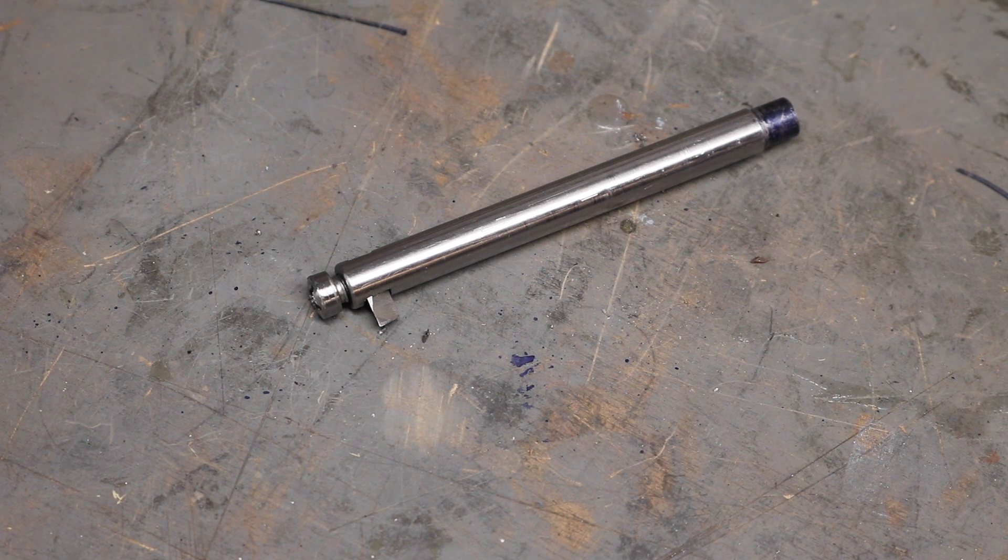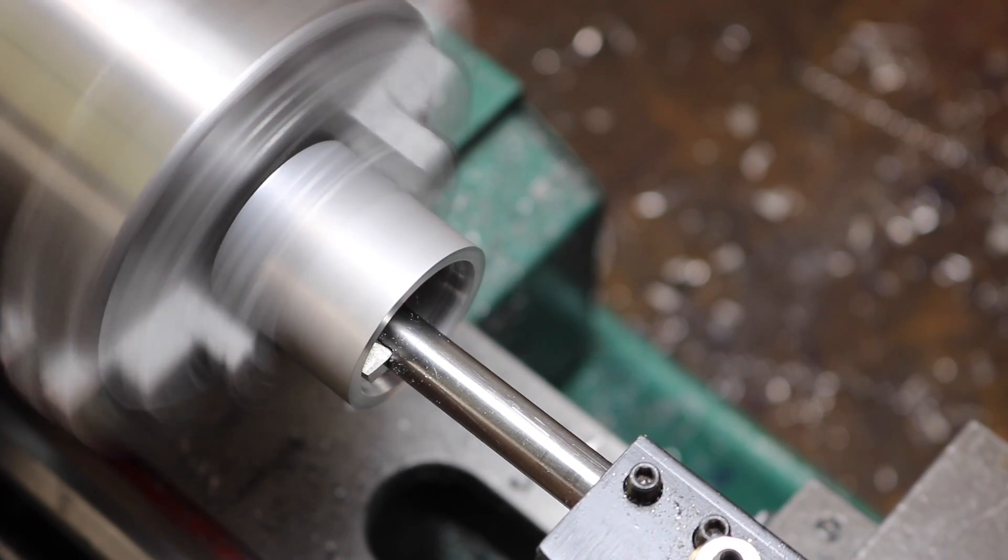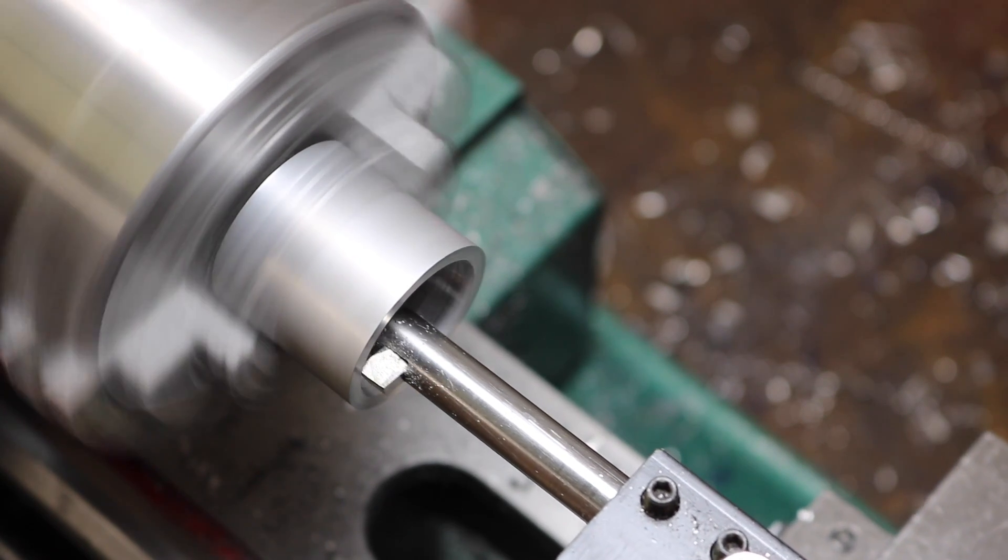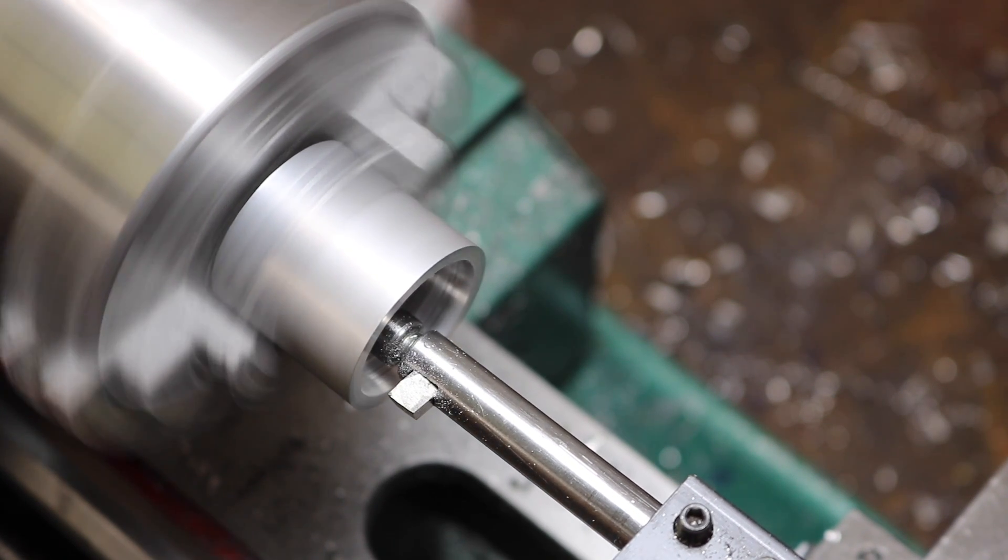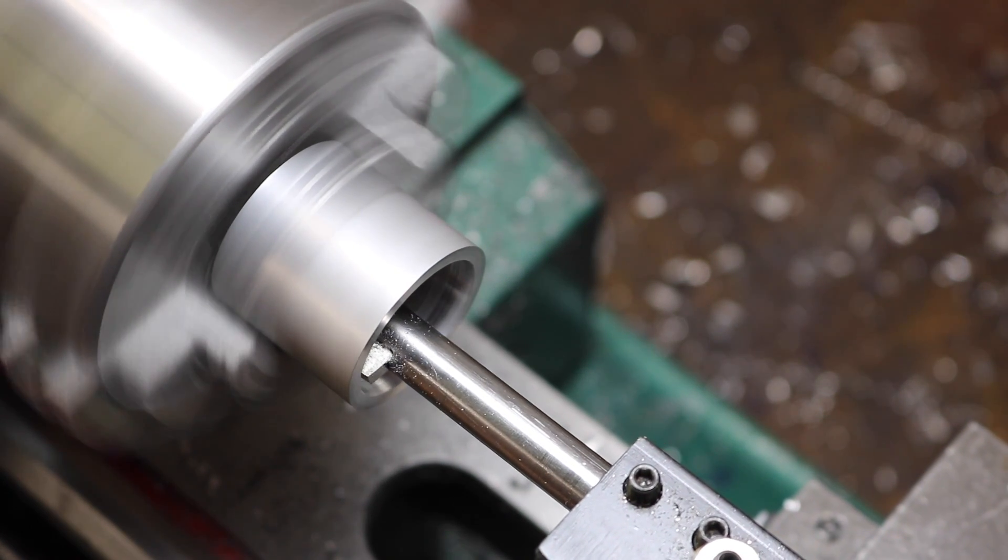But the real proof is in the pudding, so let's see how it cuts. This is just some aluminum, and I believe I bored it out to one inch with just a drill bit, and we're just running it here at about 900 RPMs and just taking some nice light cuts.